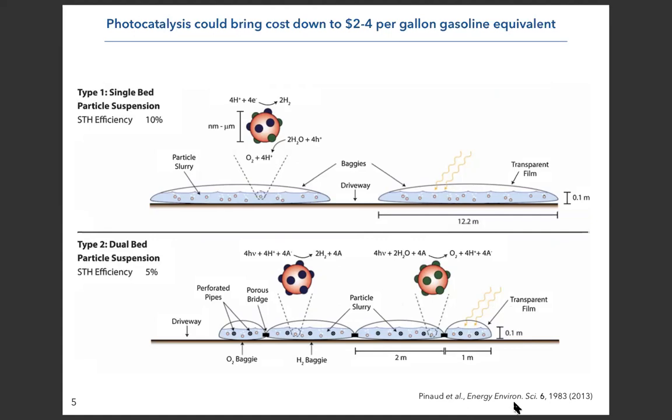The first is a single bed particle suspension—essentially two plastic bags containing a suspension of particles that can catalyze the reduction of water into hydrogen and the oxidation of water into oxygen. There's another concept where you separate the two reactions, but the concept is essentially the same: you absorb solar light, put water in those bags with a suspension of particles, and at the end of the day you produce hydrogen. You can use water and sunlight to power your fuel cell car without extracting resources from the ground. There has been a comprehensive technical economic analysis published in Energy & Environmental Science. They estimated that if we achieve an STH efficiency of 10 percent—solar to hydrogen conversion efficiency—we will be able to reduce the price of production of hydrogen to two to four dollars per gallon gasoline equivalent, making us competitive with petroleum-based fuel.